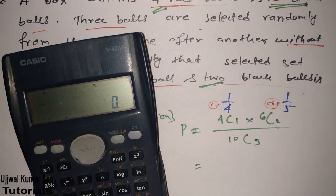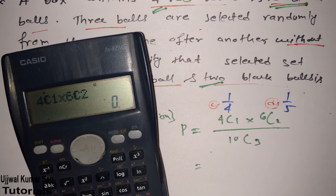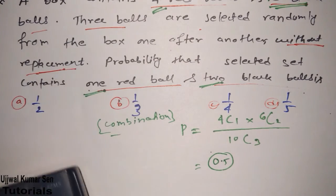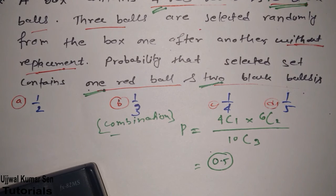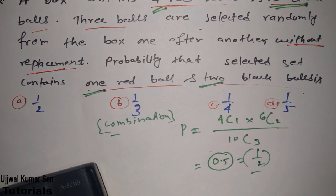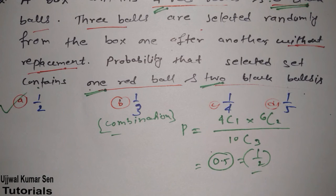All right, so let's go for it. 4C1 multiplied by 6C2 divided by 10C3. All right, so how much value basically we are getting? That is 0.5. Now look at the option. That is in reciprocal, so we can write this as 1 by 2. Now option A is the right answer for this question.